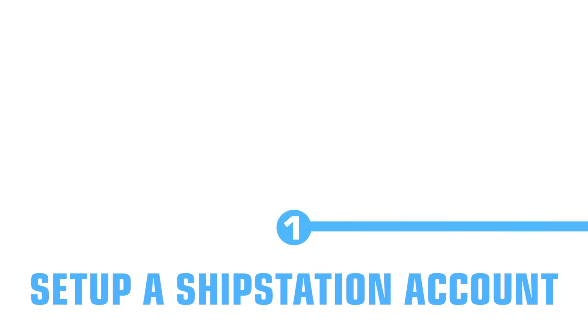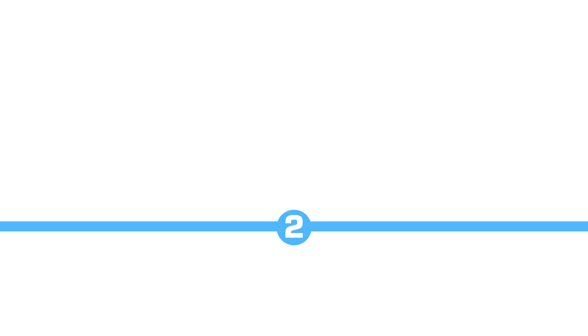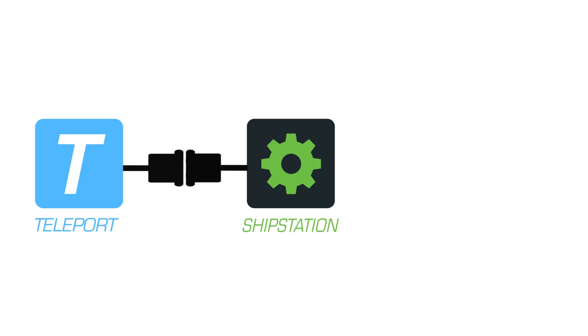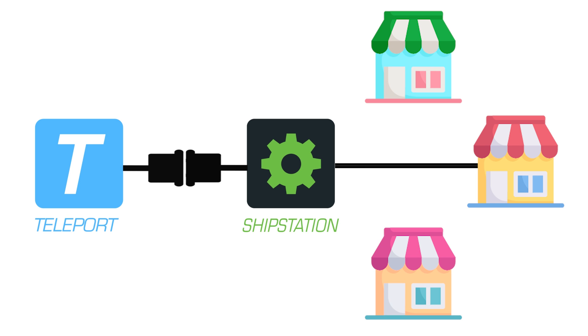The first thing you need to do is set up a ShipStation account. Once that's done, you can connect your store to it — this can be Etsy, Amazon, Squarespace, WooCommerce, whatever it happens to be. You connect that store to ShipStation and all your orders will filter down into it. If you have multiple stores, you can connect all of them to ShipStation. We have tutorials below that walk you through each one of these steps for many of these different platforms.